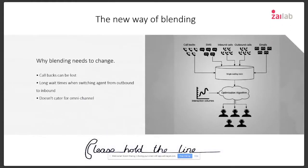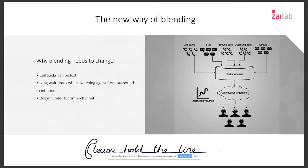The single waiting room simply means you have only one queue. All interactions — regardless of channel, whether voice, SMS, email, web chat, or social media — all arrive in one single waiting room. That waiting room can then start prioritizing between all the different interactions. We tend to say calls have a much higher SLA — pick up within 20 seconds — while email can wait 12 hours. But there are cases where an email could be even more important than a call. If one of your most important customers sends an email, you can only prioritize correctly if all interactions sit in one single waiting room.